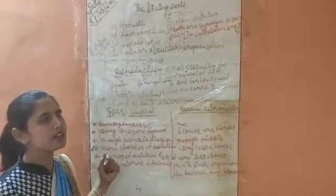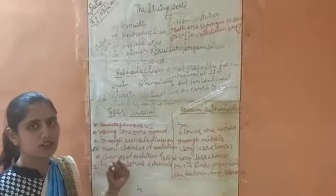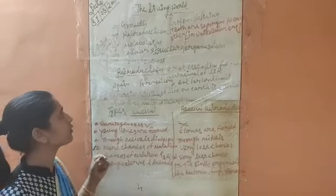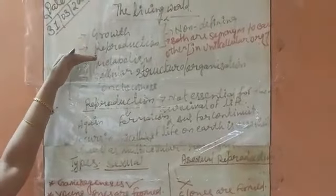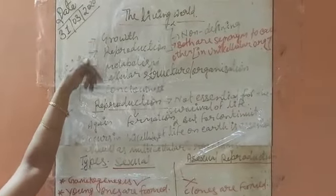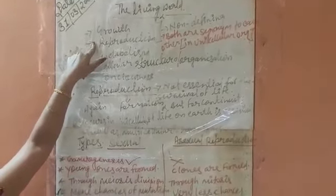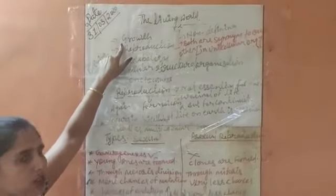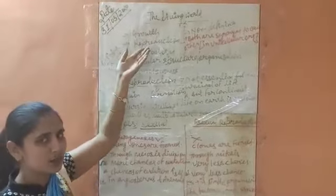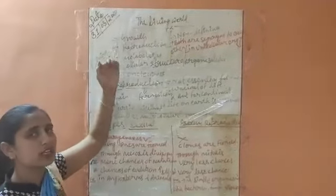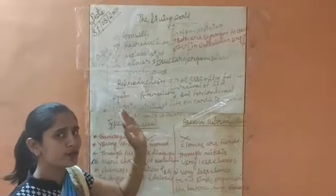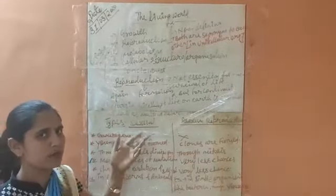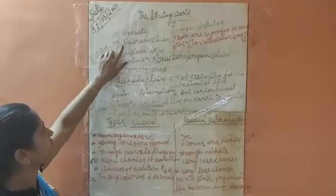Hello friends. In the previous class we had discussed about the diversity in the living world, and we also discussed the first chapter, that is the living world. In that class we also discussed the first topic of this chapter, which was growth — the increase in cell size or cell mass — along with the classifications and types of growth.